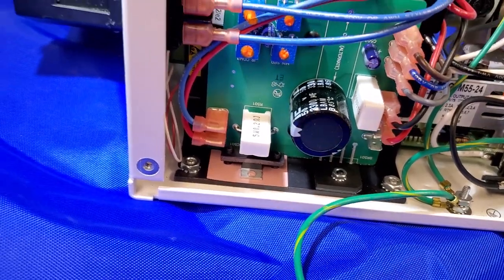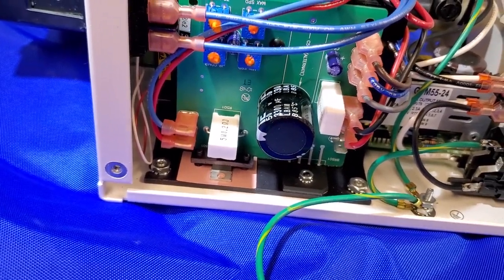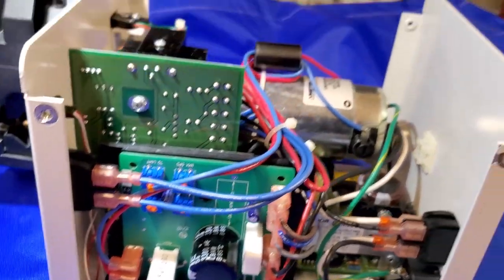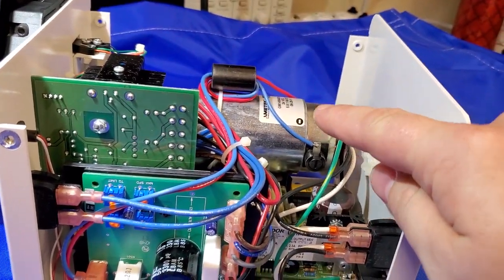It's on the thermal pad. That must be your transistor, which creates your pulse width modulation of your 24 volts DC.